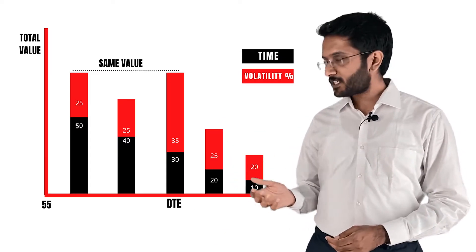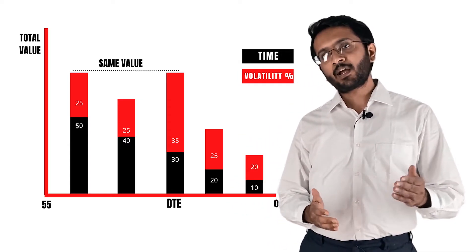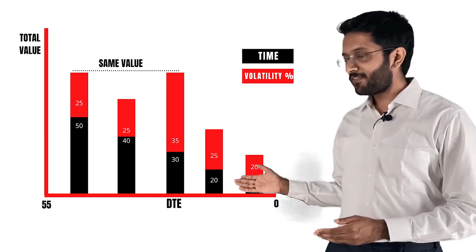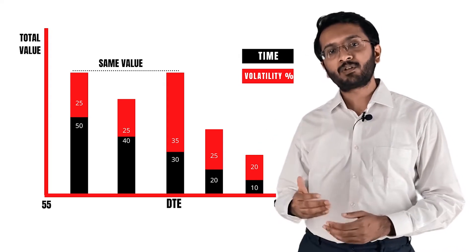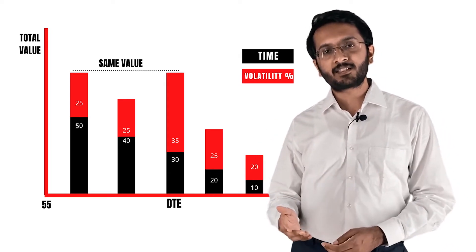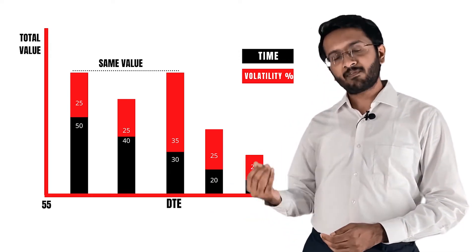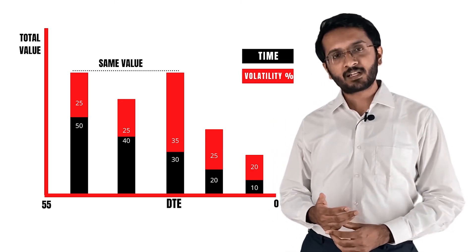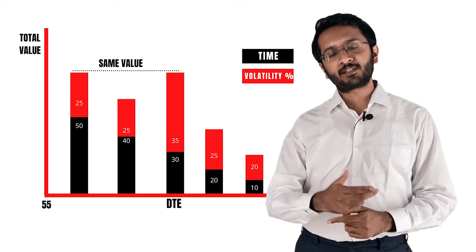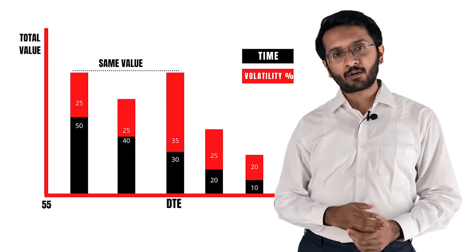It is very important that we understand: as we can see on the chart over here, as the number of days to expiry comes down — as time keeps passing — the time value will keep on depreciating and become zero. However, if the implied volatility in the markets is increasing, this volatility will add up to the extrinsic value, and even though the time value is depreciating, the volatility will increase the extrinsic value.